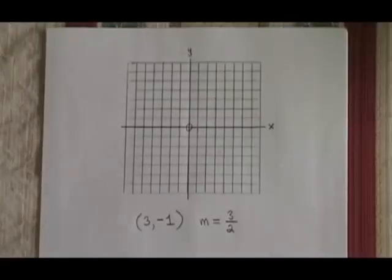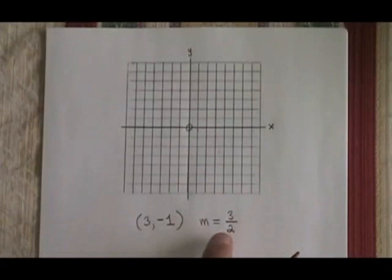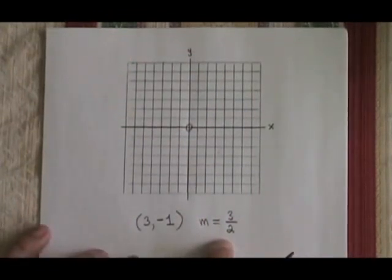The rise over run trick is something that allows us to graph a straight line so long as we have a starting point and the slope in the form of a fraction. It's a very easy trick, so we'll do several examples to make sure that we're ready to deal with it no matter how the question is asked.